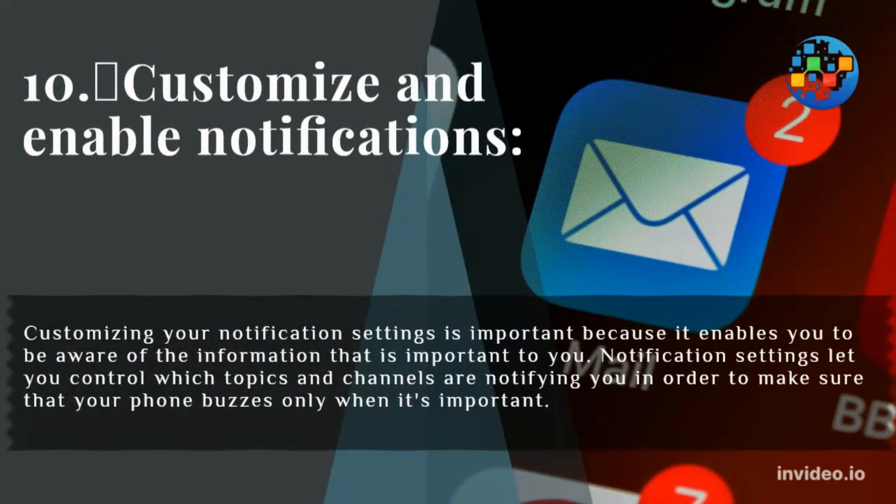10. Customize and enable notifications. Customizing your notification settings is important because it enables you to be aware of the information that is important to you. Notification settings let you control which topics and channels are notifying you, in order to make sure that your phone buzzes only when it's important.